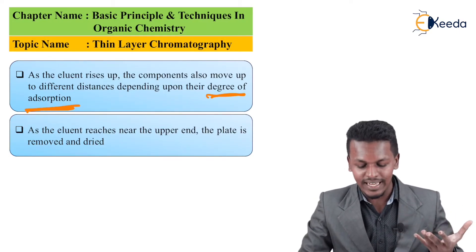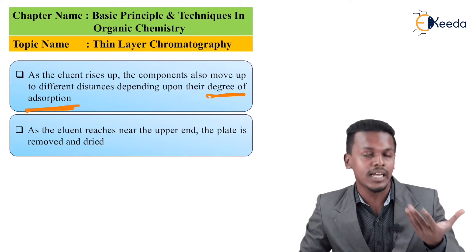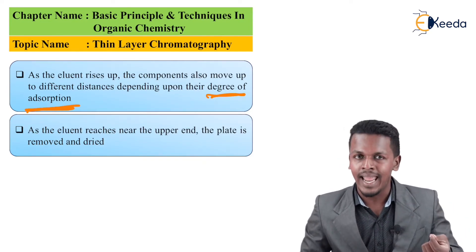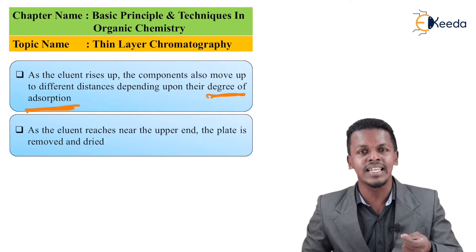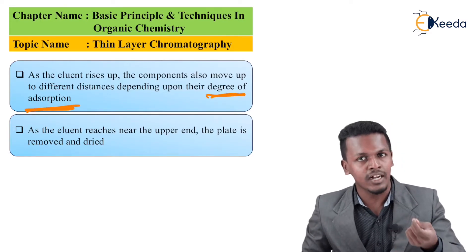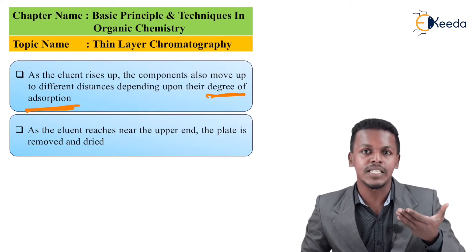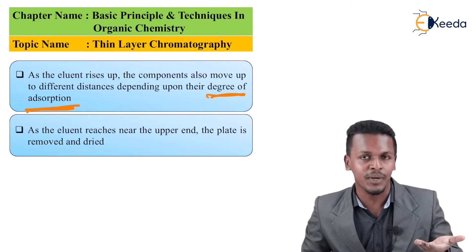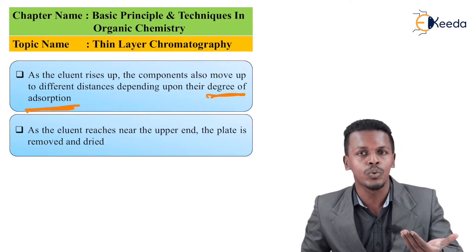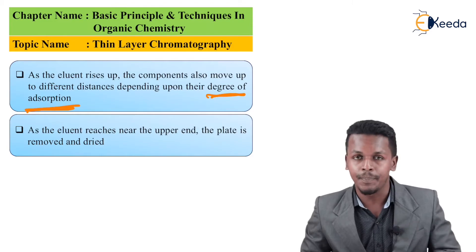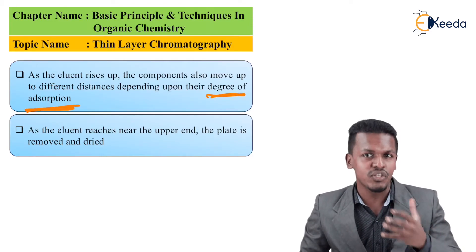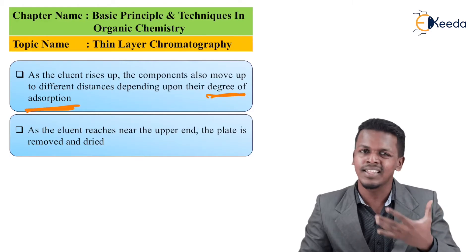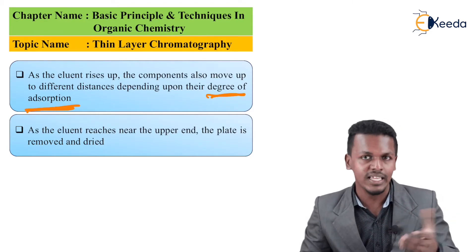As the eluent reaches the upper end, we remove the chromatoplate from the beaker. The chromatoplate is then dried — the solvent is absorbed into the thin layer and must be dried out. The solvent used is a volatile component, so the thin layer chromatoplate can be dried very easily.